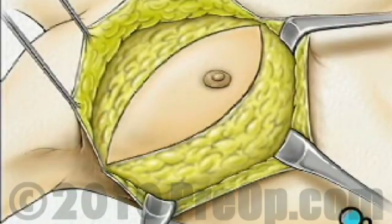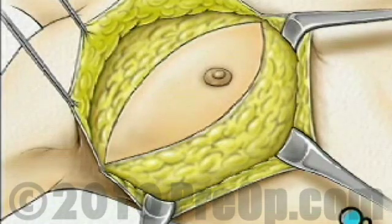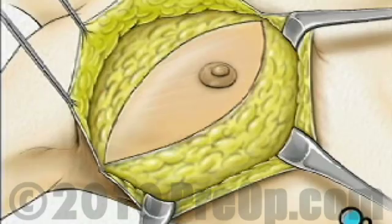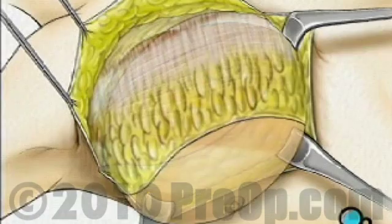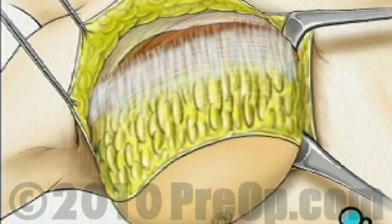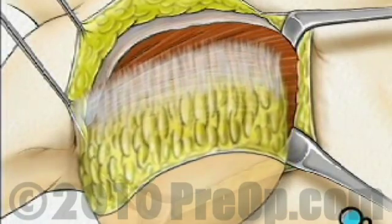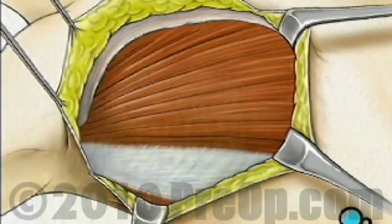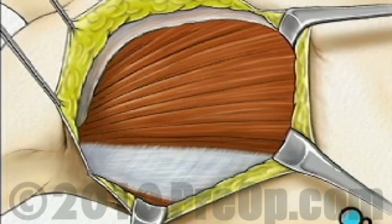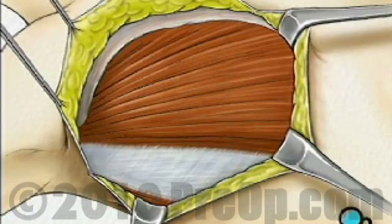Beginning at the clavicle, or collarbone, the surgeon then begins to carefully cut the breast tissue away from the muscles that lie just beneath. When the breast has been completely freed, it is lifted away, exposing the top layer of muscle called the pectoralis major. If the cancer has spread to this muscle, your doctor may elect to remove it as well.